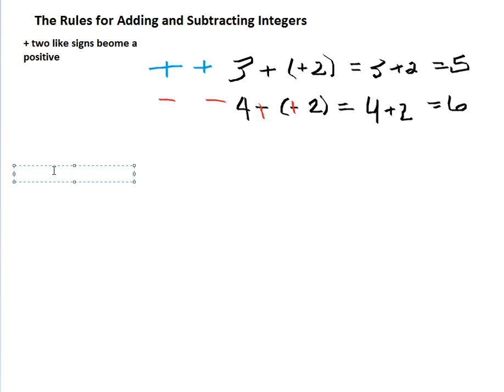Next, we have the negative rule. Two unlike signs become a negative sign.